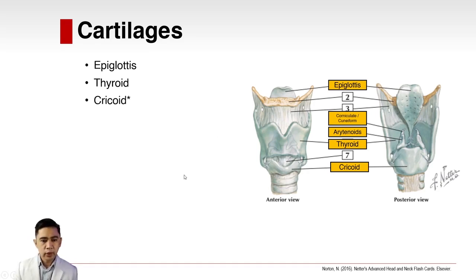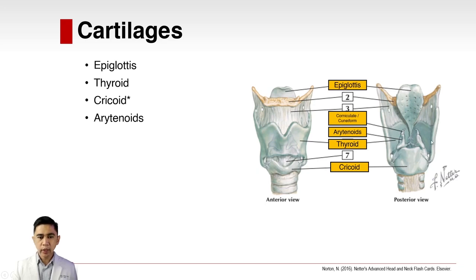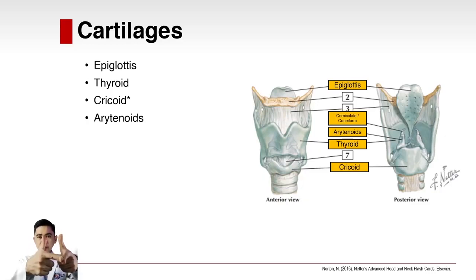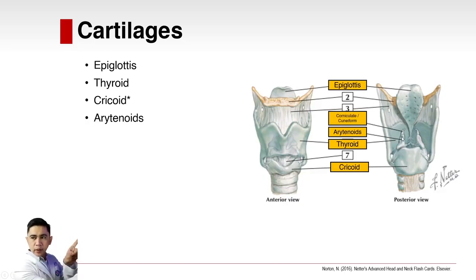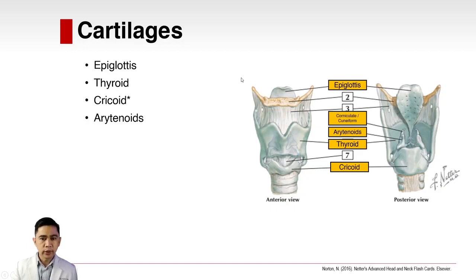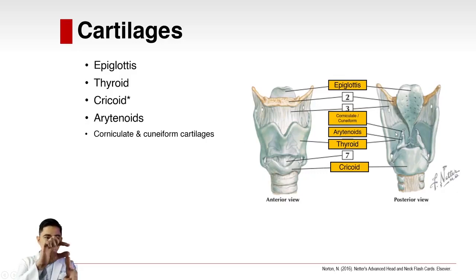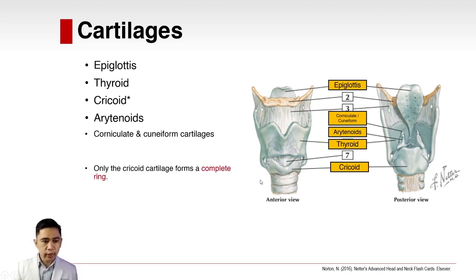We also have the cricoid — the lowermost part of the laryngeal complex — and the arytenoids. The arytenoids are the ones that suspend the vocal folds. We also have minor cartilages such as the corniculate and the cuneiform, found on top of the arytenoids. Of all the cartilages, only the cricoid cartilage forms a complete ring.